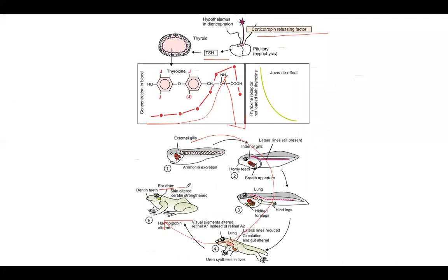The important changes in metamorphosis include: eardrums develop, teeth develop, skin is altered, the spine is strengthened, legs are formed, and lungs are remodeled. With that, we can complete the process of metamorphosis in amphibians. In the next class, we will discuss metamorphosis happening in insects.